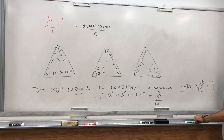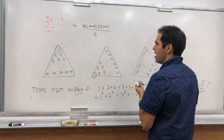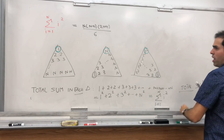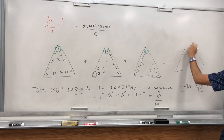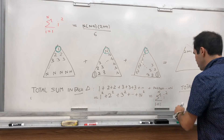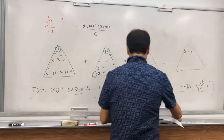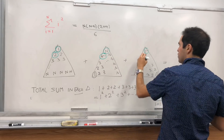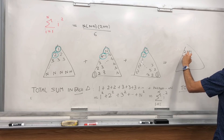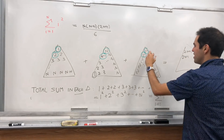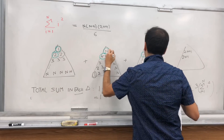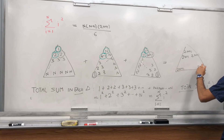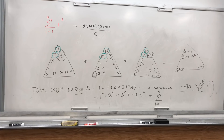On the other hand, consider summing each corresponding term across the three triangles. For example, 1 plus n plus n gives 2n plus 1. And let's check another: 2 plus n plus (n minus 1) plus something gives 2n plus 1. In fact, it turns out this is true for every term — each set of corresponding entries sums to 2n plus 1.